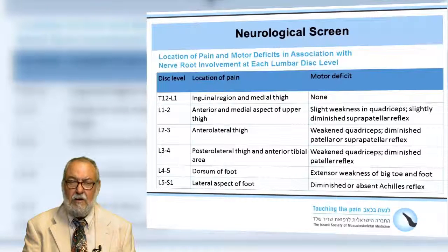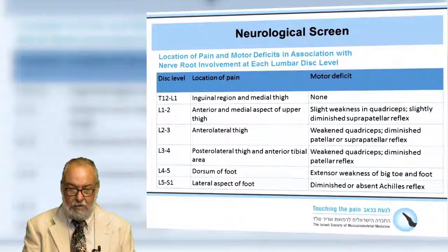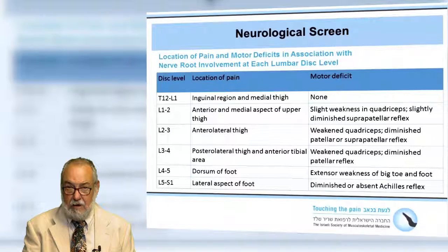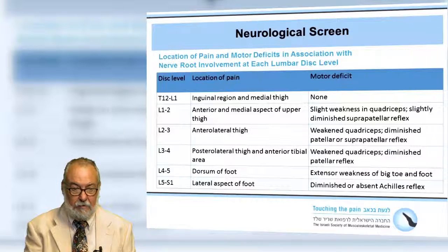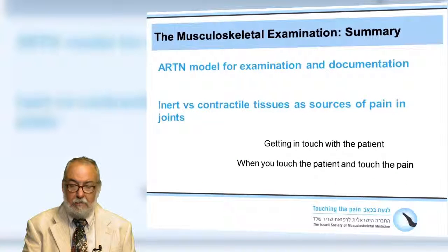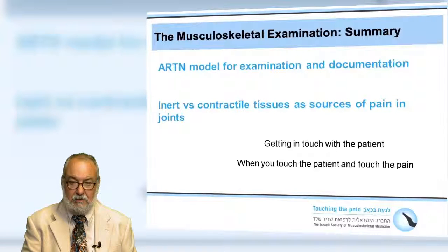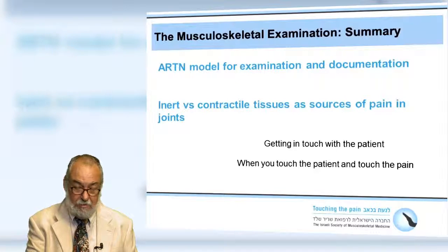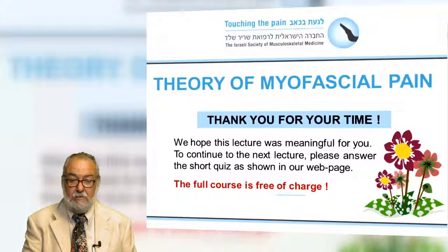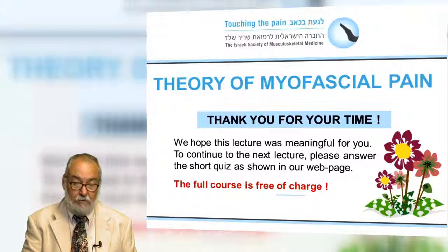These tables show the disc level, location of pain expected, motor deficit, and reflexes — such as the patellar reflex or Achilles reflex — that would be present or absent depending on the level of pathology. The ARTN model for examination and documentation is simple, easy to learn, and easy to remember. It's important to look at inert versus contractile tissue as sources of pain in the joints, and it's all about getting in touch with the patient. When you touch the patient and touch the pain, you get in touch with your patient. Thank you for your time; we hope this lecture was meaningful. Please answer a short quiz on our webpage to continue — the full course is free of charge.